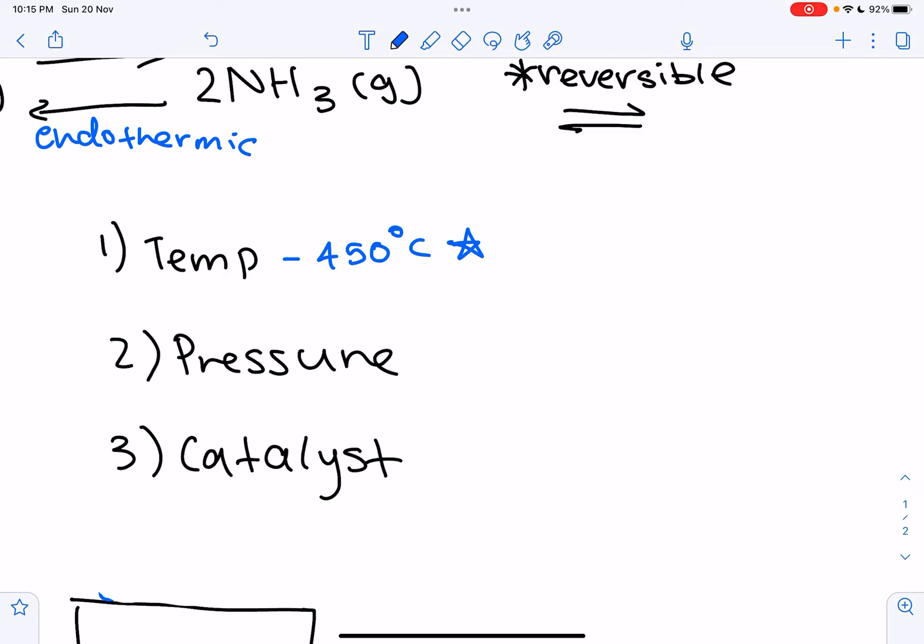So why is it a 450 degrees temperature? Well, because we're looking to compromise, because if we have a too high temperature, it will turn endothermic. But if the temperature is too low, then the rate of reaction is going to be really slow. So that's why we're compromising between yield and rate in this scenario.